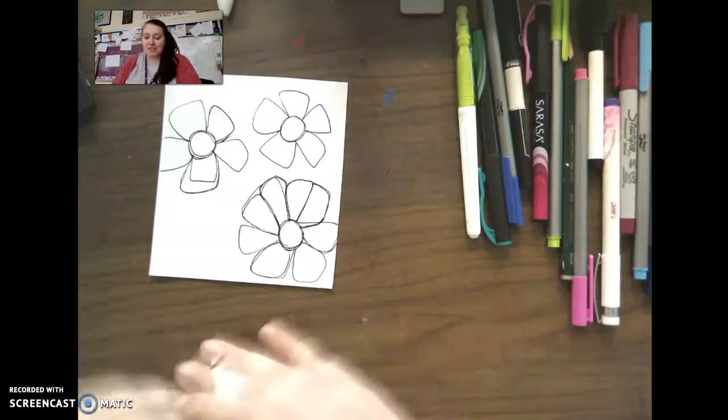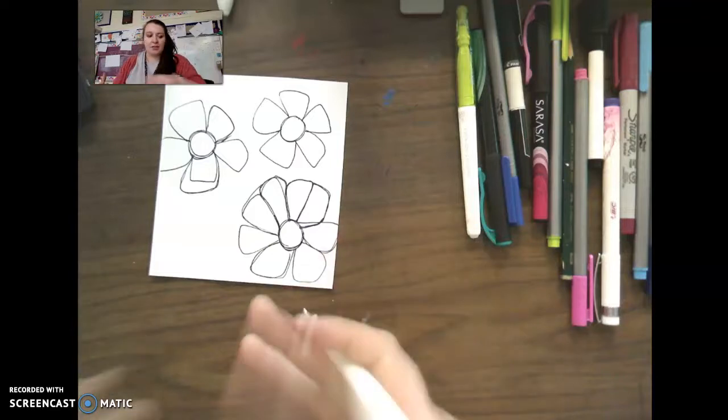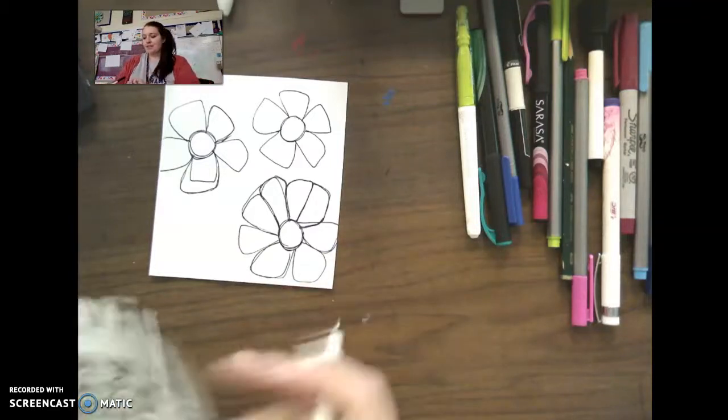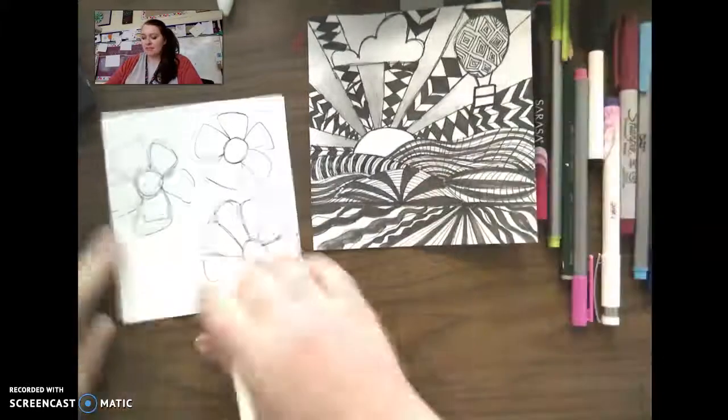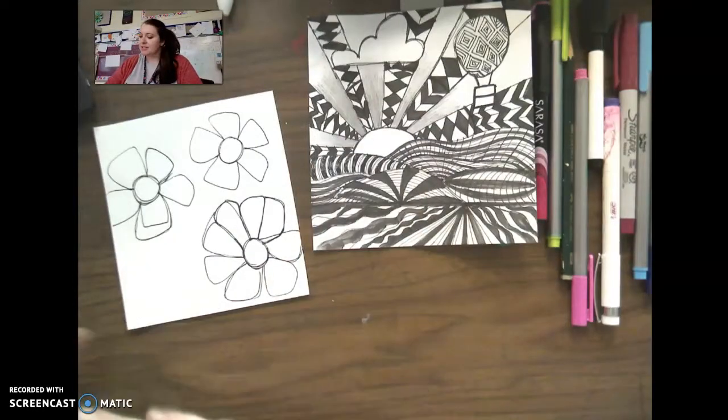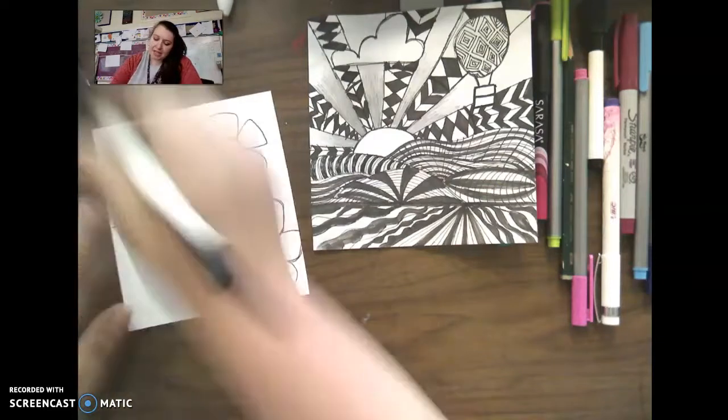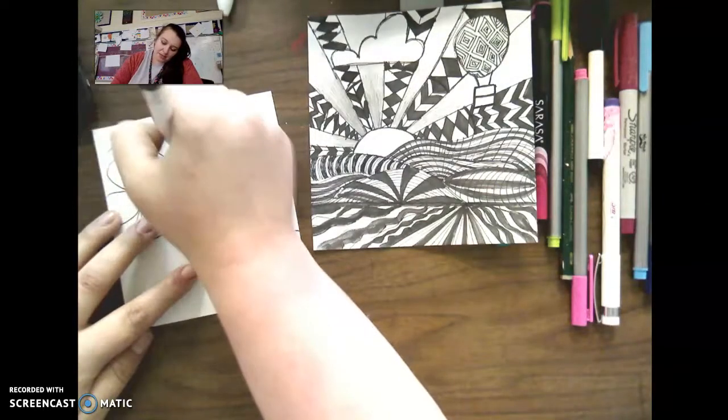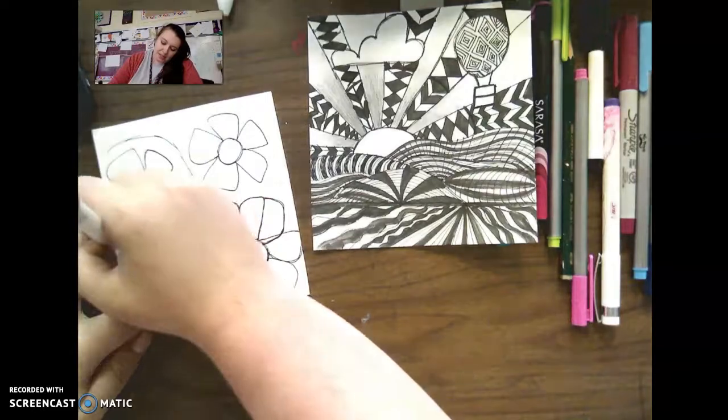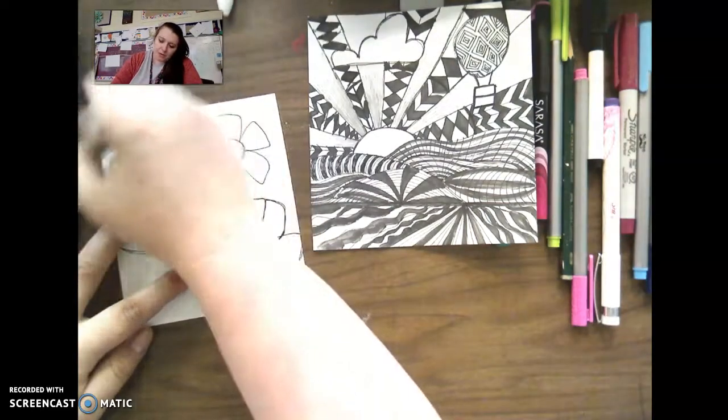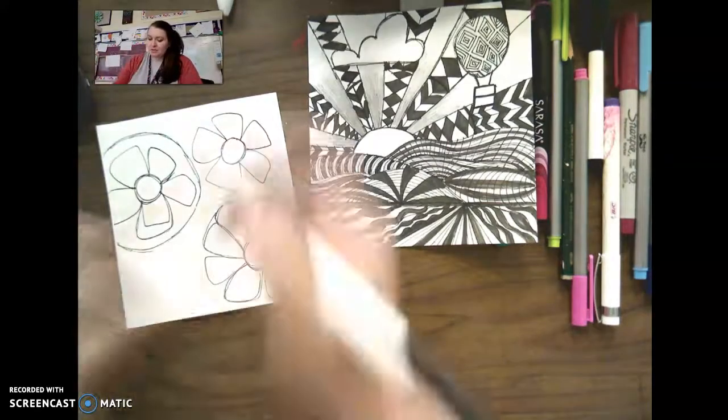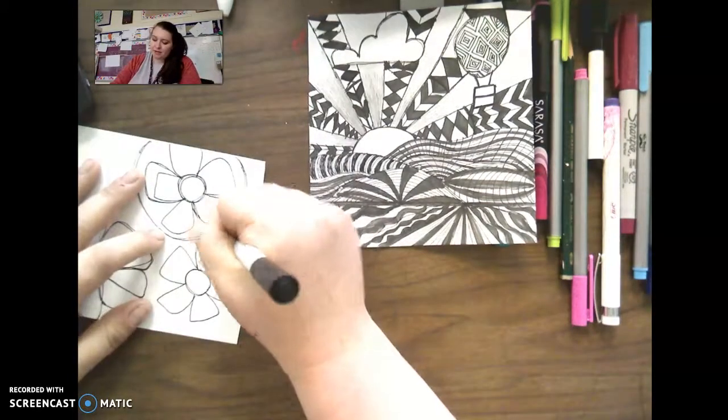So now what you're going to do is fill up the space with lots of different line designs. Here's an example of a different type of line design drawing. You can fill this up with all kinds of different things. I like to sometimes make circles around my subject area to make it stand out, or my focal point, just make them stand out from the background a little bit.